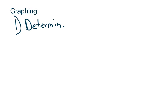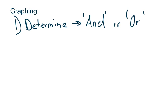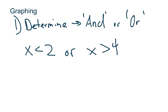Now let's talk about graphing. The first thing you have to figure out is whether you have an 'and' or an 'or'. For example, if we have x is less than two OR x is greater than four, the word 'or' is literally in there, so this is obviously an 'or' compound inequality, which means I'm going to have a gap.